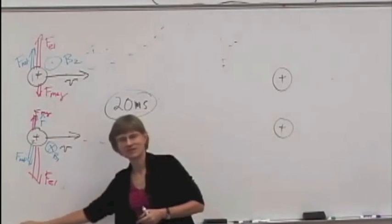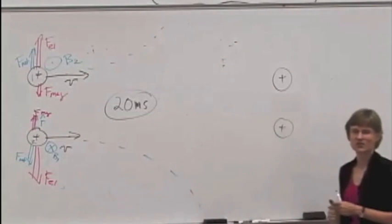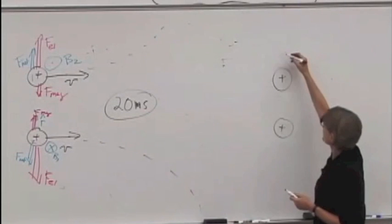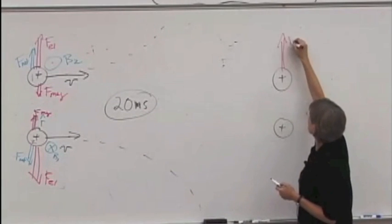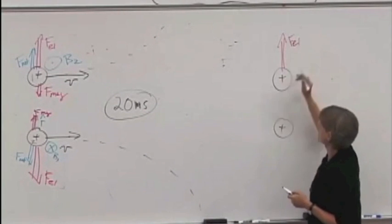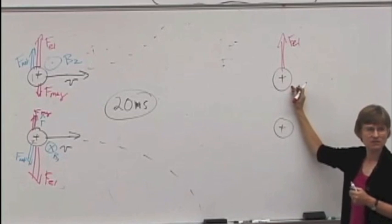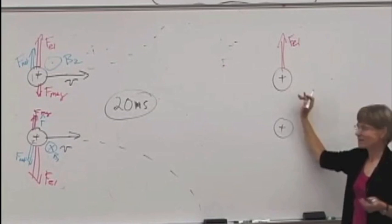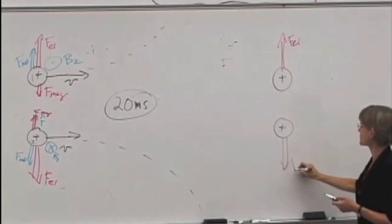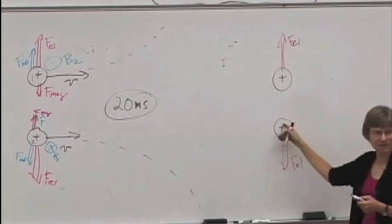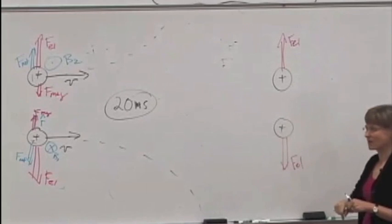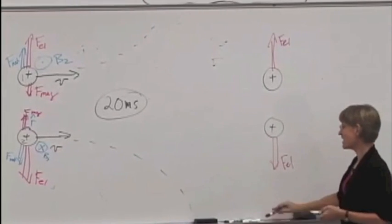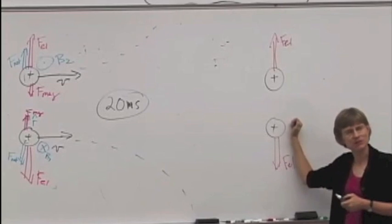So what forces does he calculate on these guys? At this instant, there's an electric force up. And is there a magnetic force? No, because there's no magnetic field, right? Nobody's moving. And there's an electric force down. Is there a magnetic force? No. So the net force, he actually sees a bigger net force.